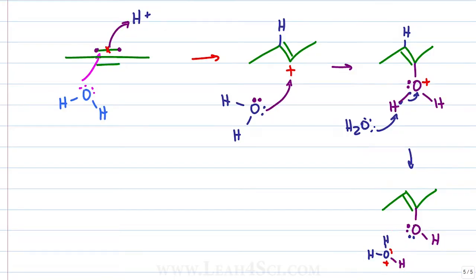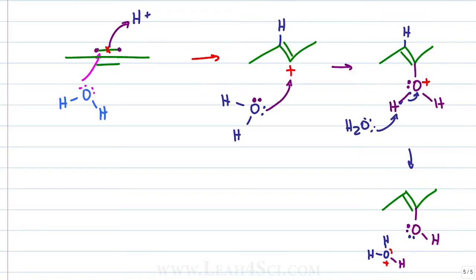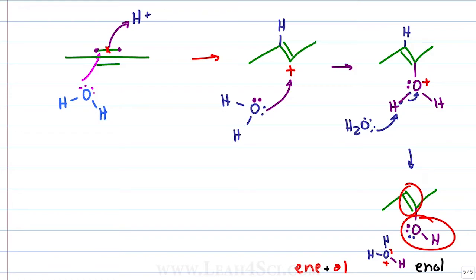But the reason we're not done is that the molecule we formed is not very stable. If you have a molecule with an alkene ("ene") and an alcohol ("ol") on the same carbon, this is what we call an enol. The enol is unstable and will undergo what's called keto-enol tautomerization — which I teach in the video linked below — to give us a keto product.